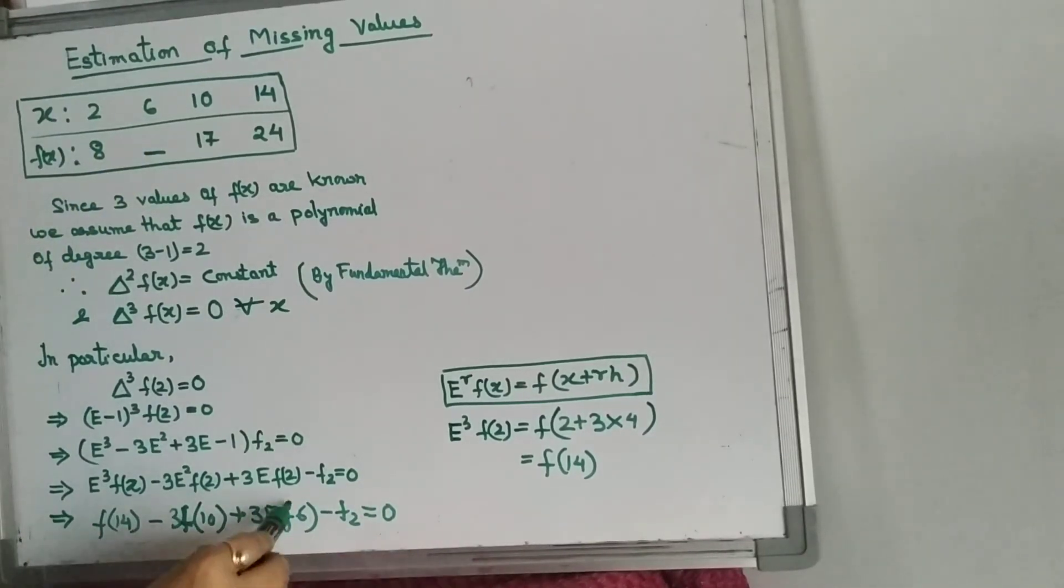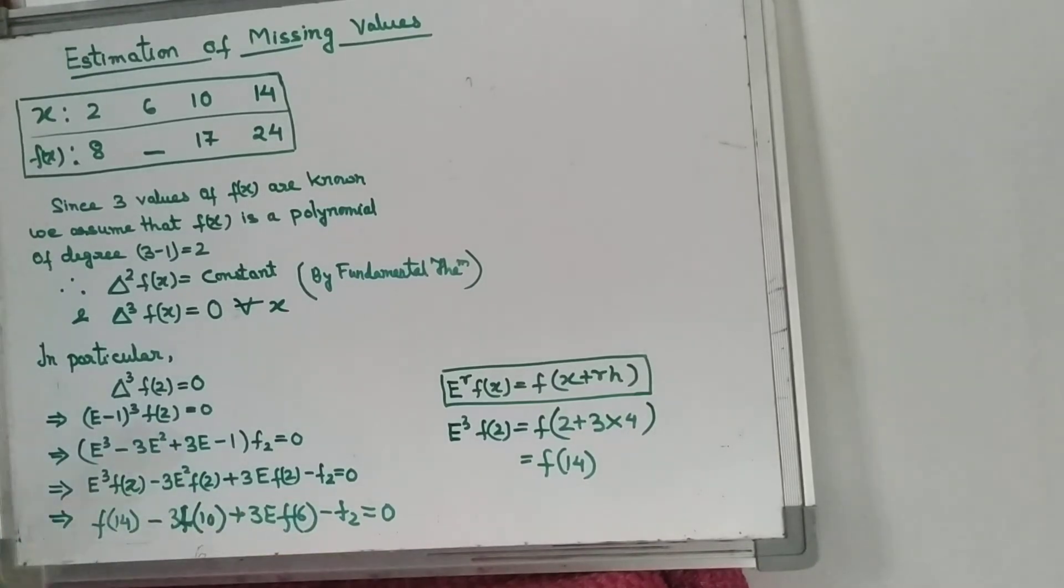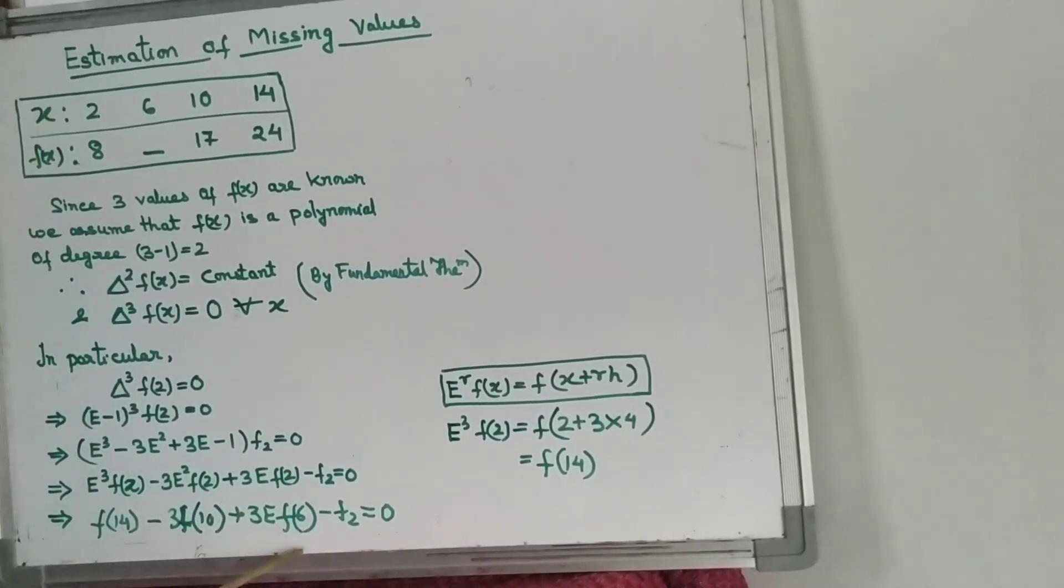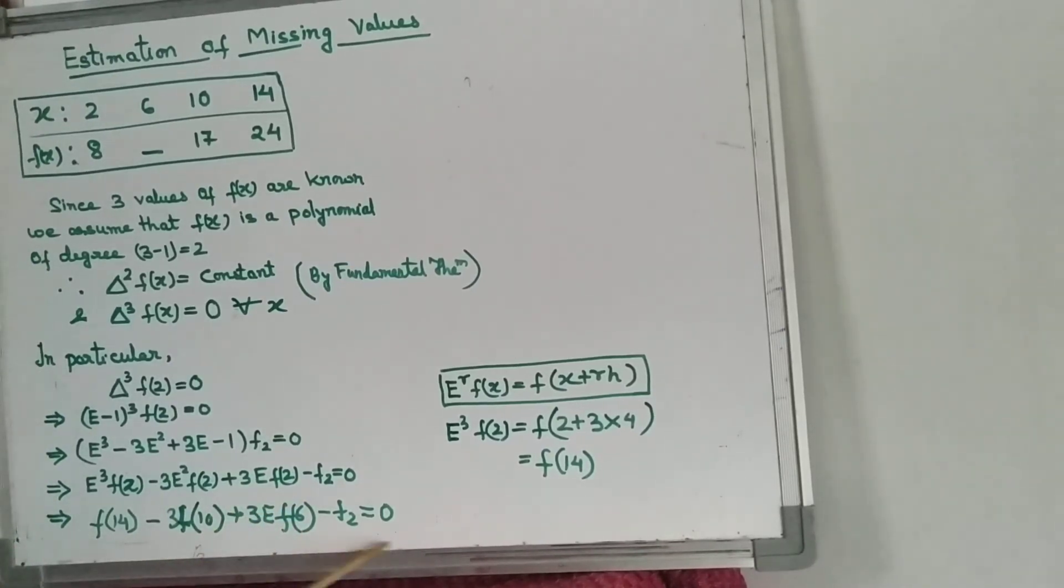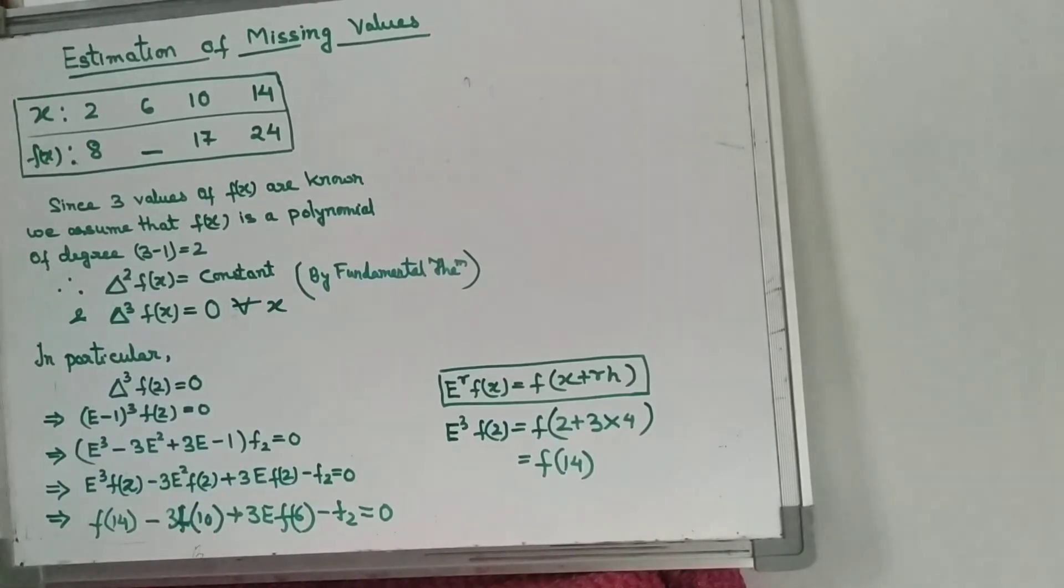Minus f(2). f(2) is 8, so we put 8 here. All the values are known, just this f(6) we can evaluate by this equation. So this is the way of finding the missing value.